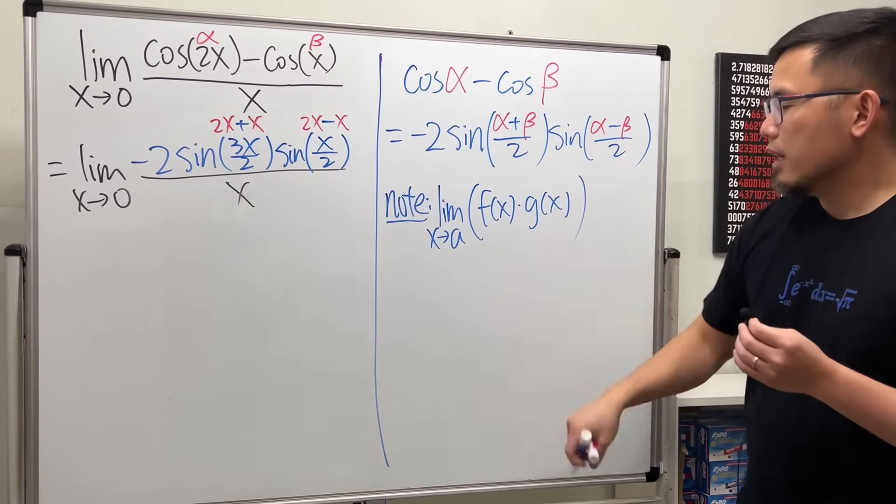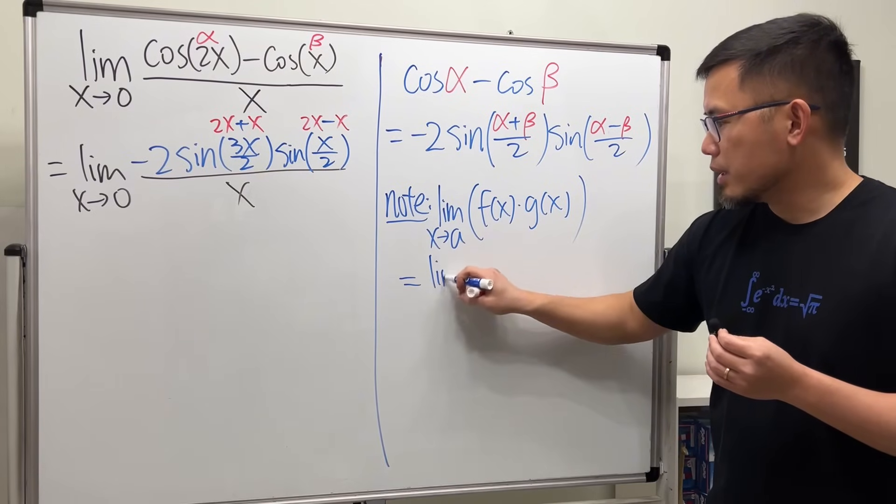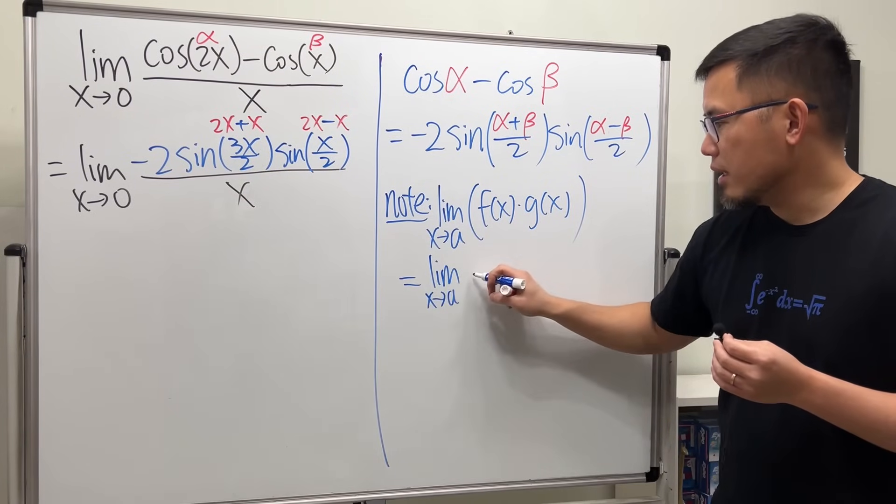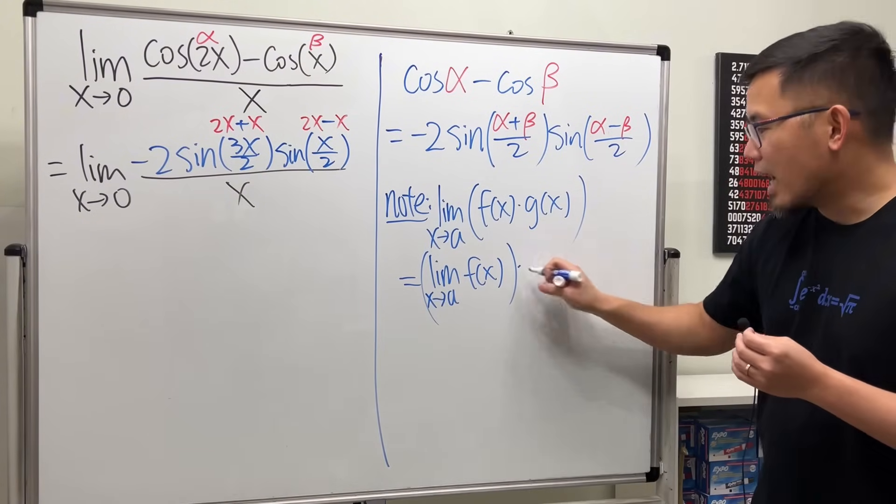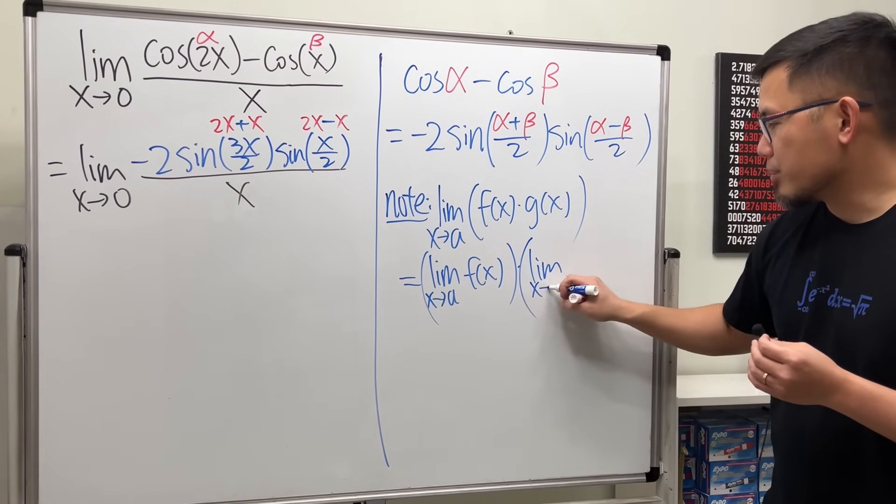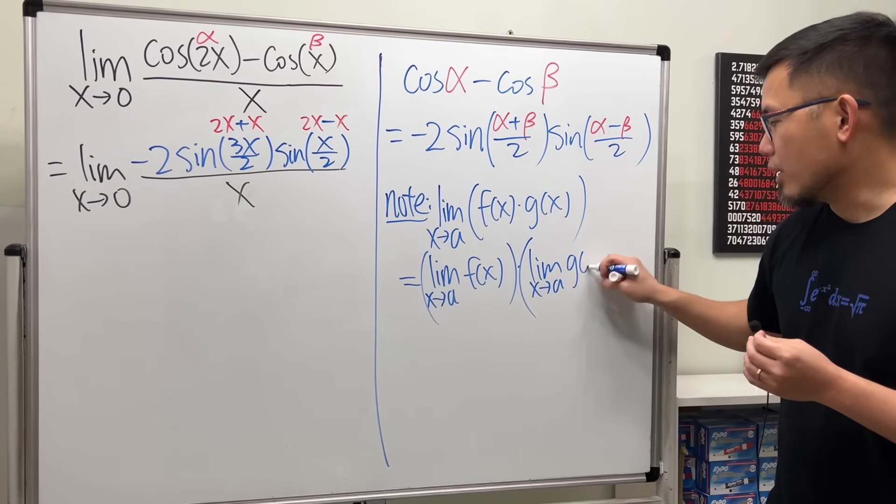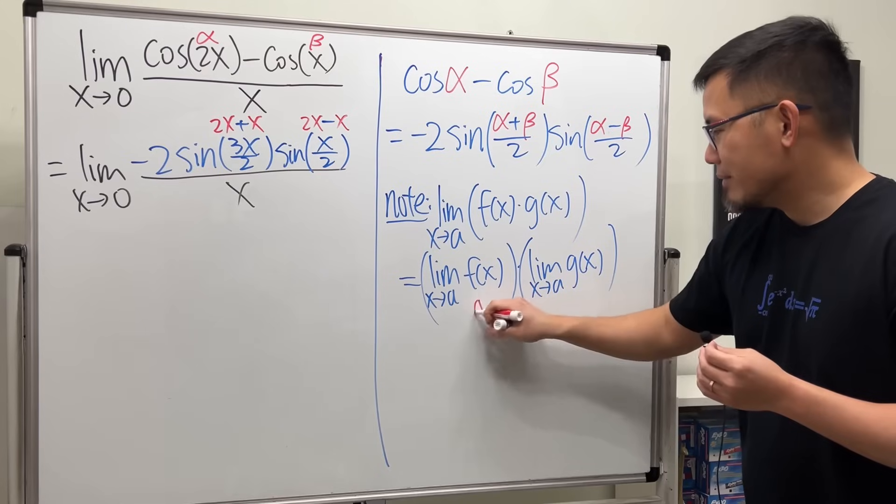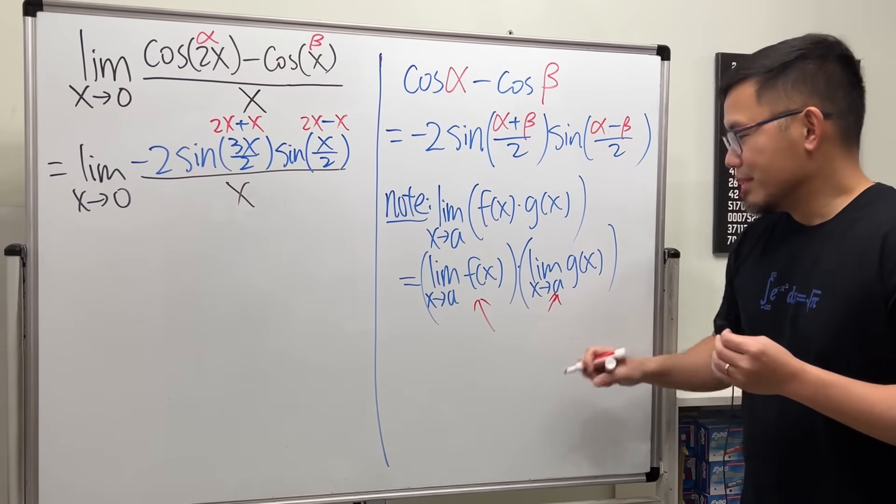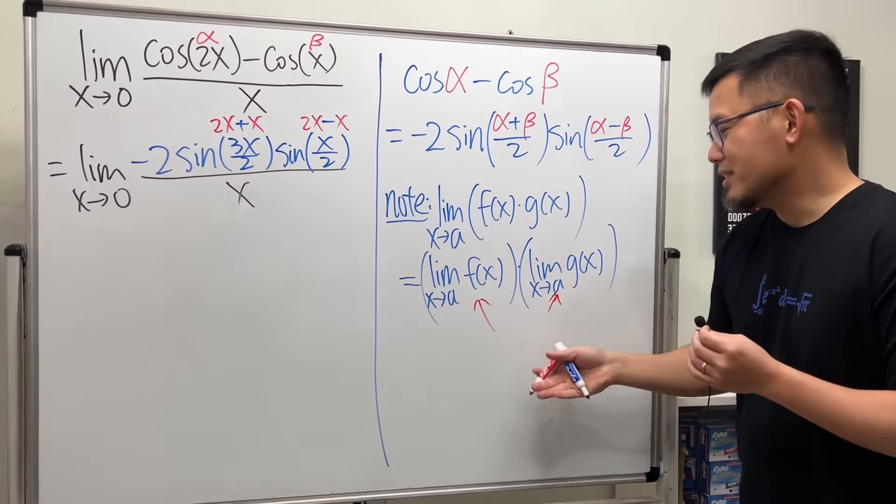And then times the limit as x approaching a of g of x. And of course we have to have a condition. The condition is that both of these must exist in order for this to be true, right?